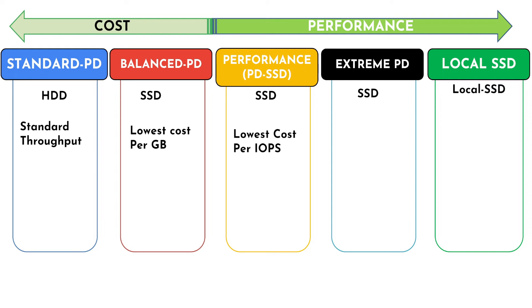Performance disk SSD, or PD SSD, provides the lowest cost per IOPS. The recommended workload for extreme persistent disks includes SAP HANA or similar applications in which uncompromising performance is needed.